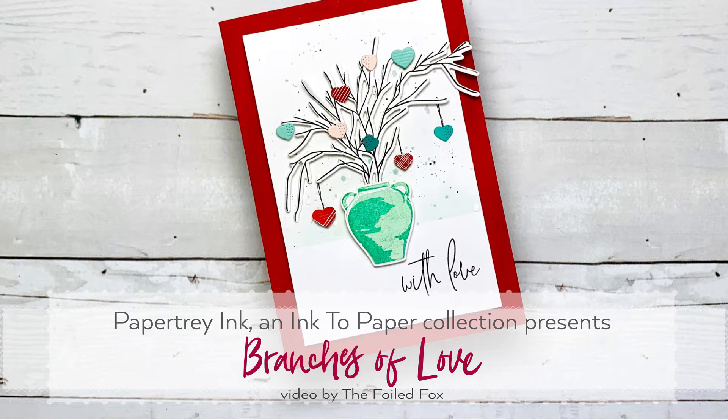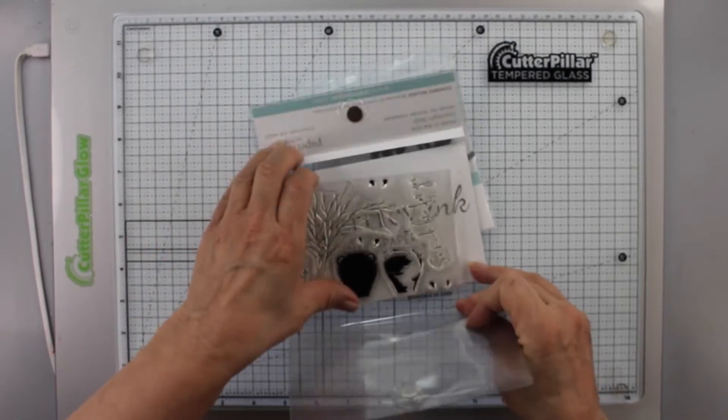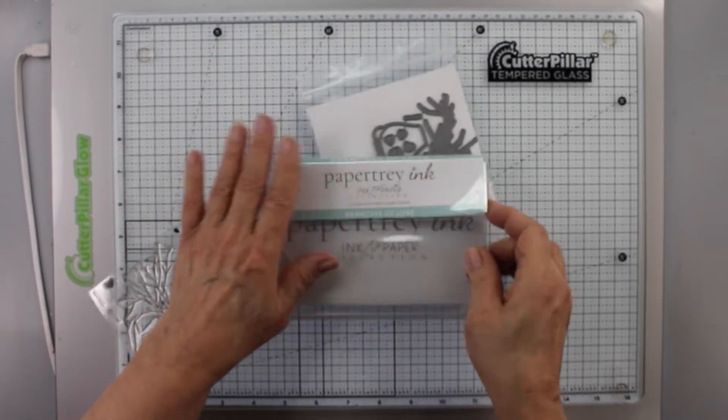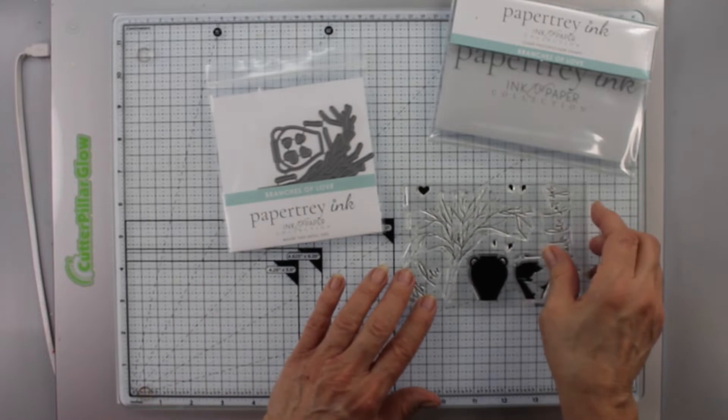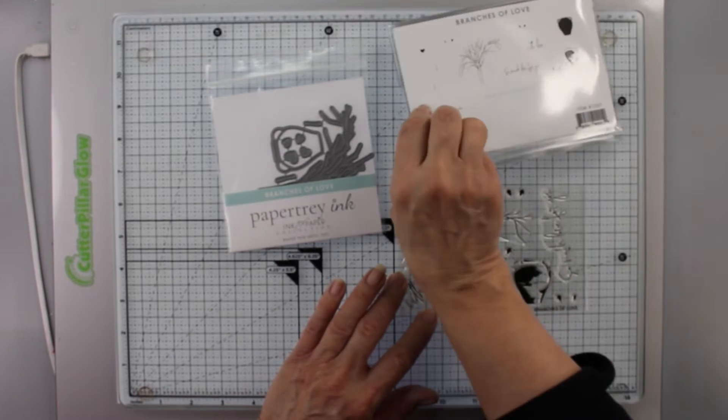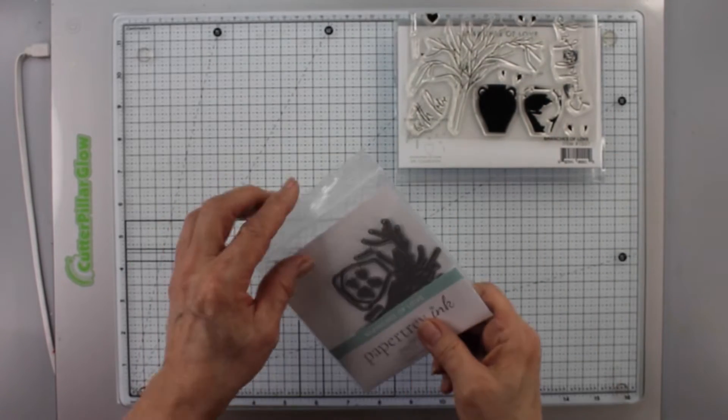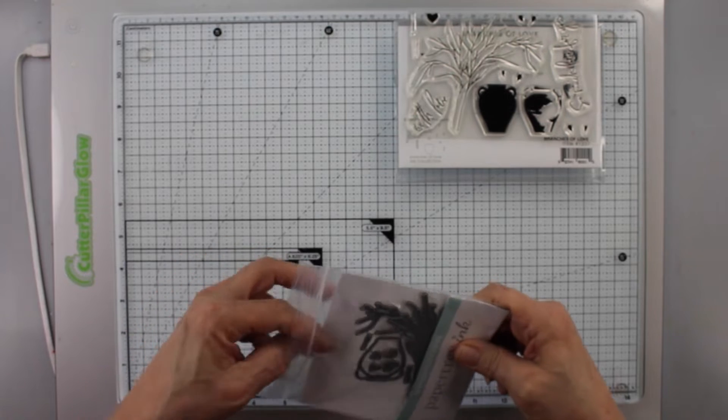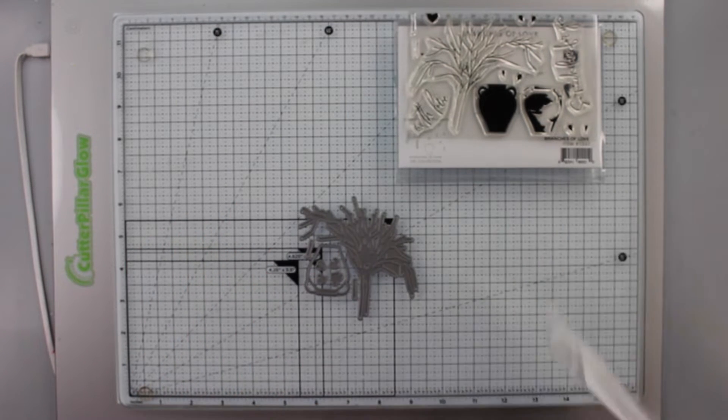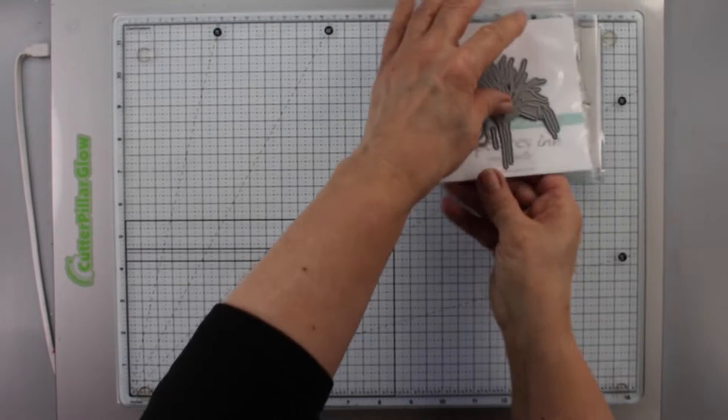Hi there, this is Shawna from The Foil Fox and I'm here on Paper Tray Ink and Inked A Paper's YouTube channel. I'm sharing a new stamp and die set called Branches of Love. It comes in this great hold and fold pouch with a 4x6 stamp set that has the branches in the pot, some sentiments, and a layering stamp for the pot. It has the matching die set that cuts out the main pieces.